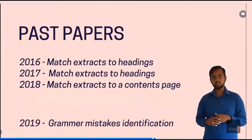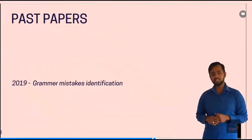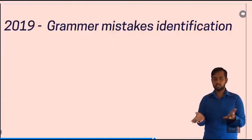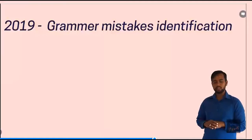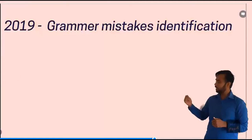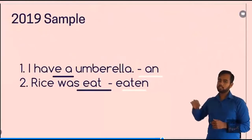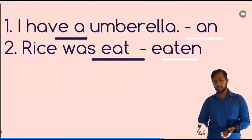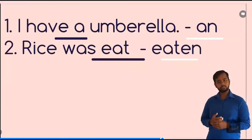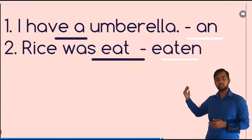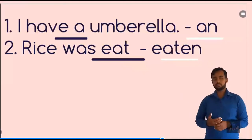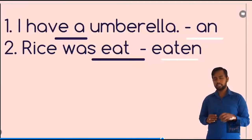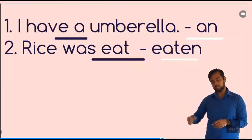Unfortunately for you children — and unfortunately for me — this year they have changed to grammar. Grammar is very simple, it's like mathematics. In 2019, a particular word is underlined and they state this word is wrong; you have to write the correct format of the word. For example, they have written 'a umbrella' — the correct word is 'an umbrella' or 'the umbrella.' Or they have written 'was eat' — it should be 'was eaten.' Something similar to that.